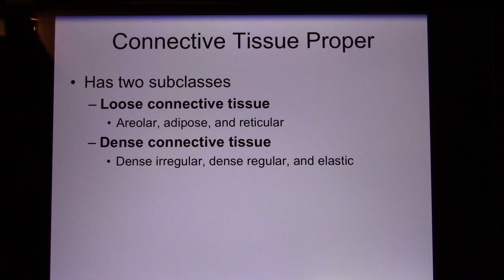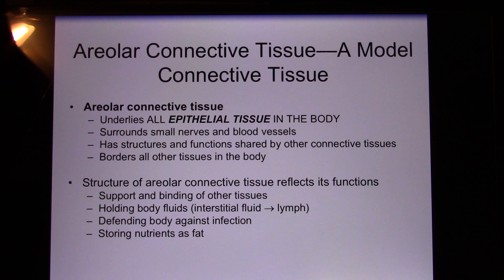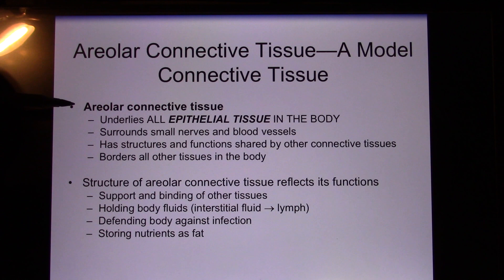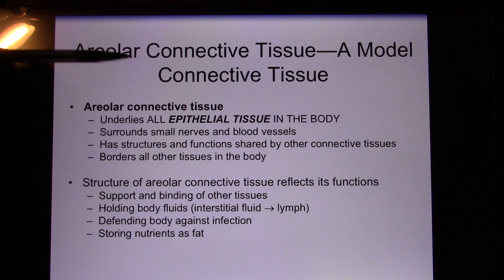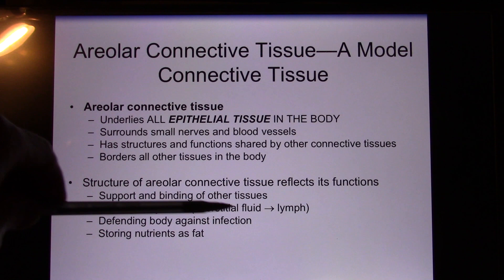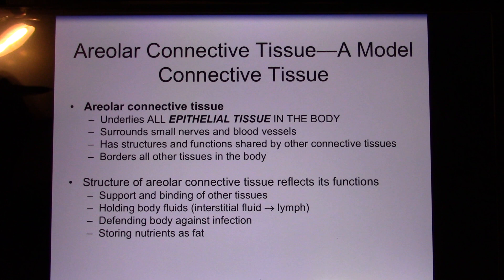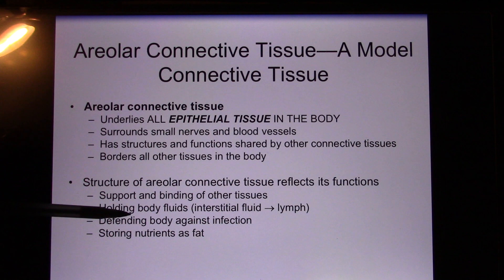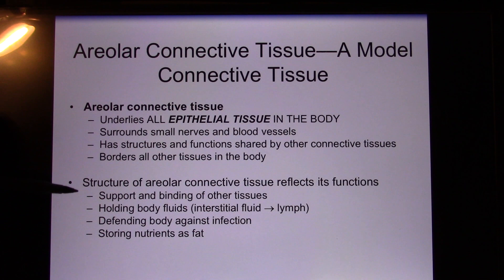Let's look at loose connective tissue. The first one is areolar connective tissue — you find it in a lot of areas, like under all epithelia, like your skin. Between your skin and the muscle, you have areolar connective tissue. Its function is structure, support, and holding body fluid. Your body fluid accumulates there — we call it interstitial fluid. Ideally it goes to the lymphatic system, becomes lymph, and goes back to circulation. If a patient has edema, too much water accumulates in the areolar connective tissue under the skin.